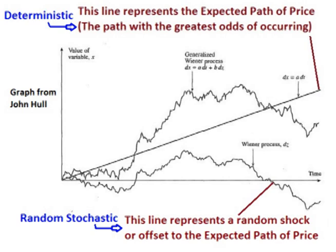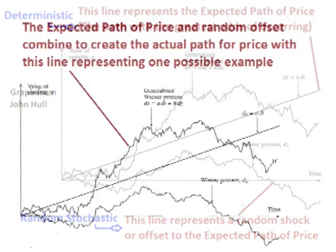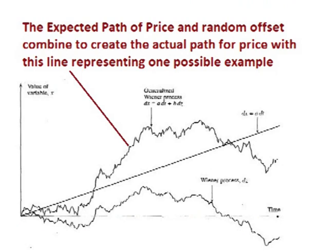This movement contains the same two components: a deterministic component and a random stochastic component. The deterministic component becomes the expected path of price, and the random component is the random shock or shift to that expected path of price from the randomness caused by volatility.